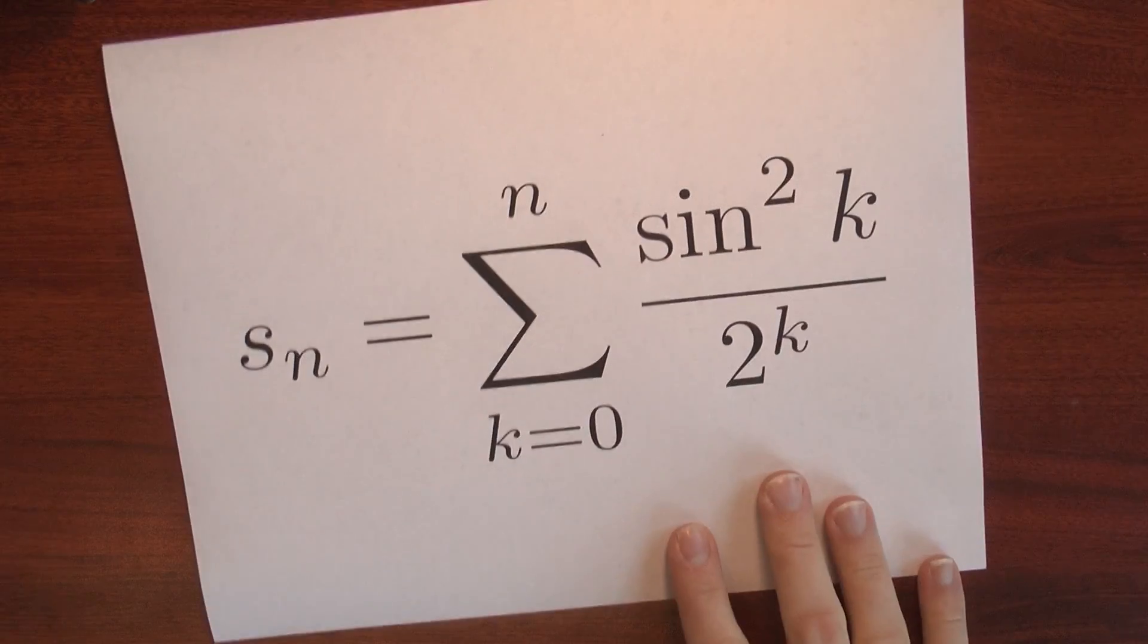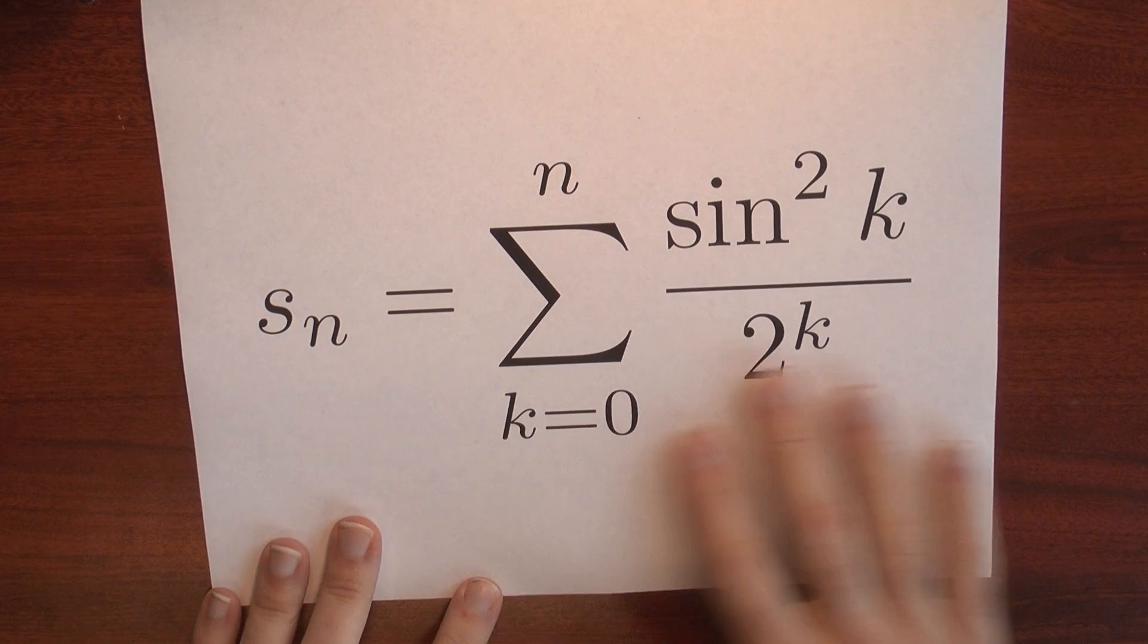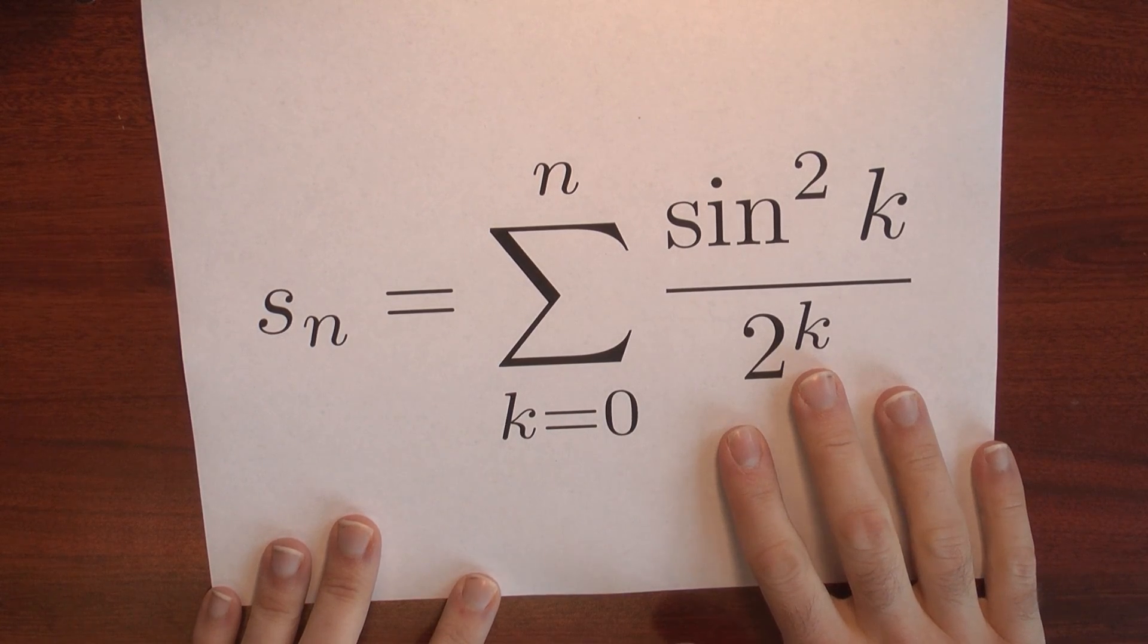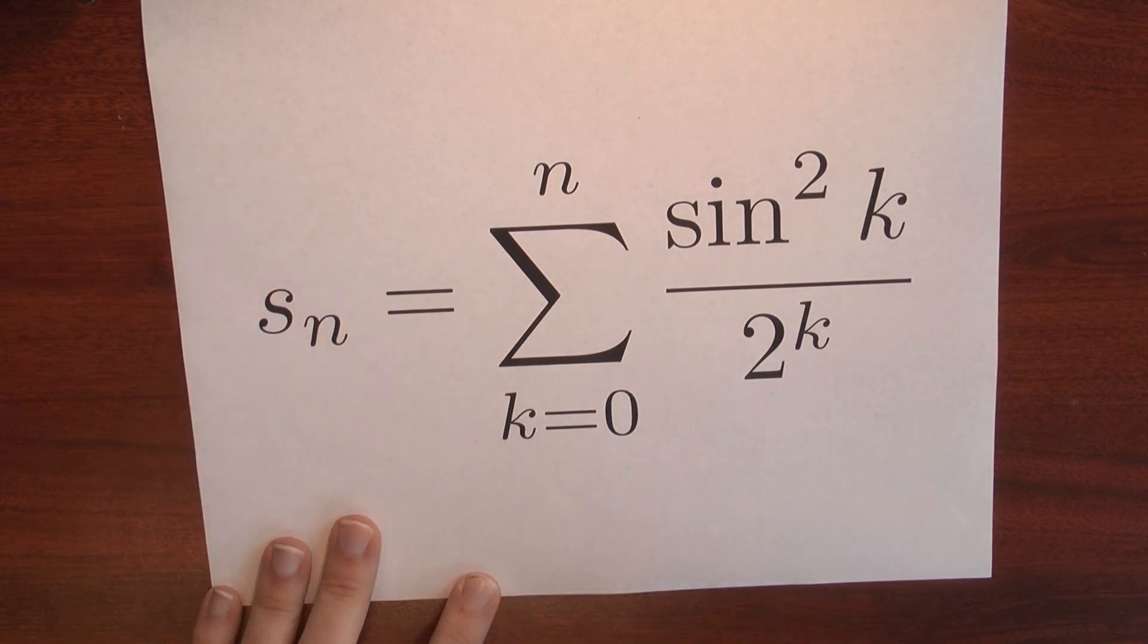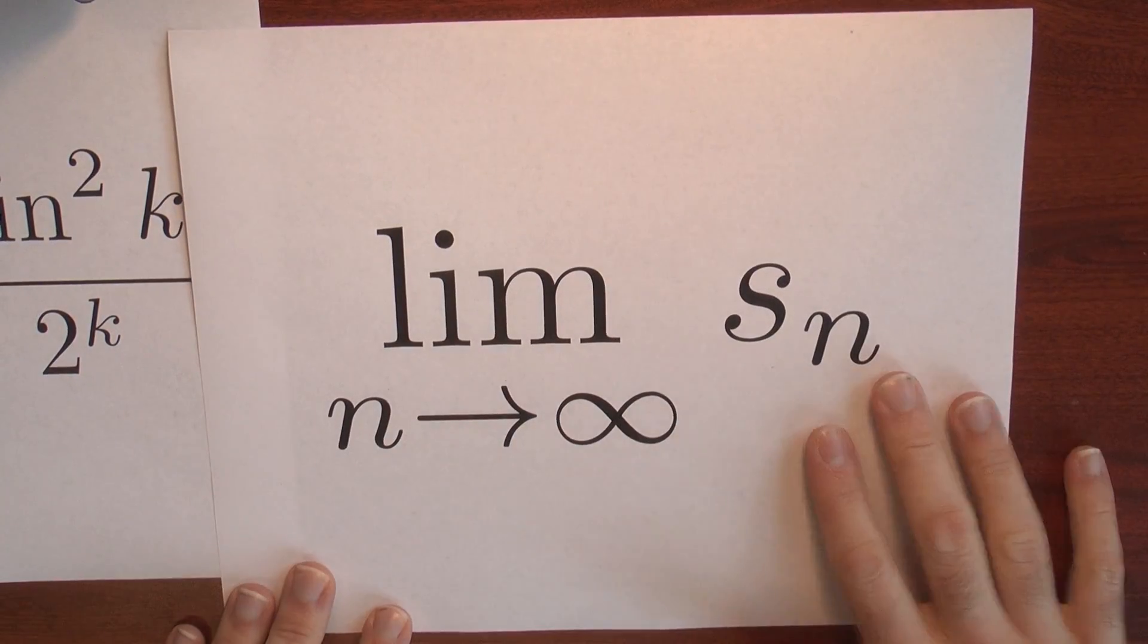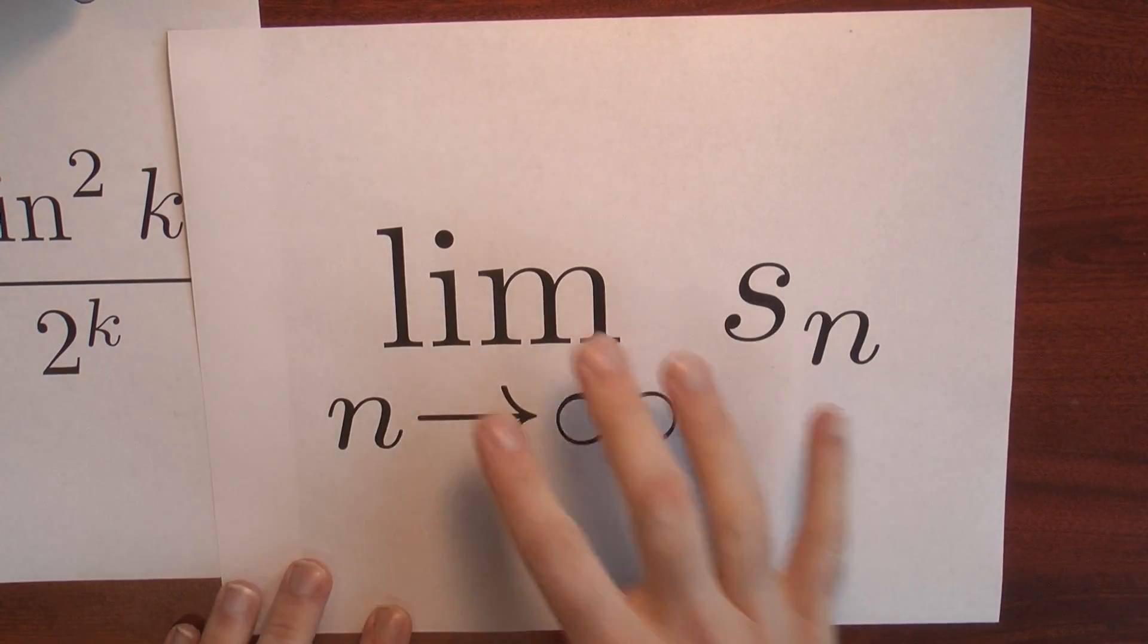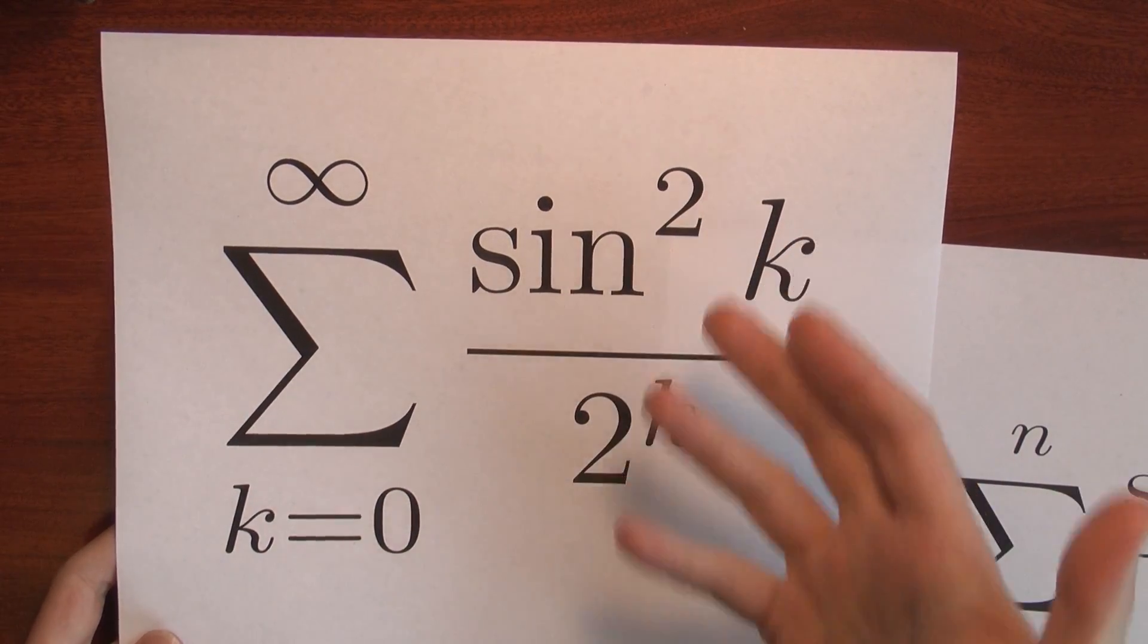That question really means that I'm supposed to be looking at the sequence of partial sums. I should add up the terms between k equals 0 and n, and then ask about the limit of the partial sums. And if this limit exists, that's exactly what it means to say that this original series converges.